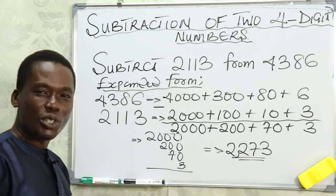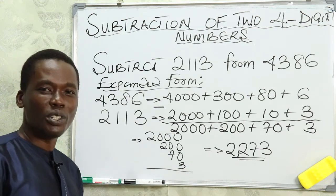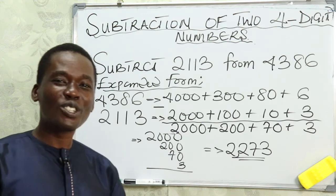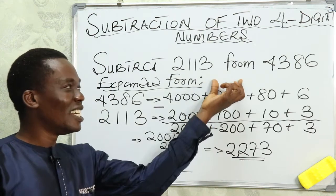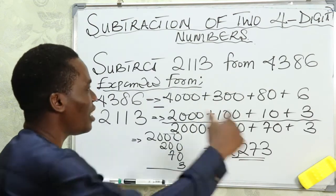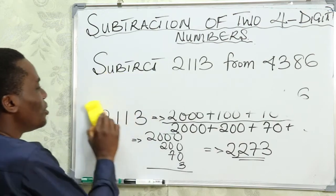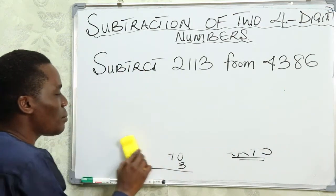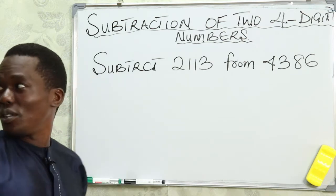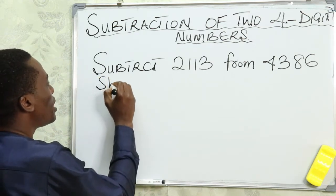The answer is 2273. Did you get the same thing? I know you've been following and you can do it. Now let's look at how to solve this same question using the short form method.